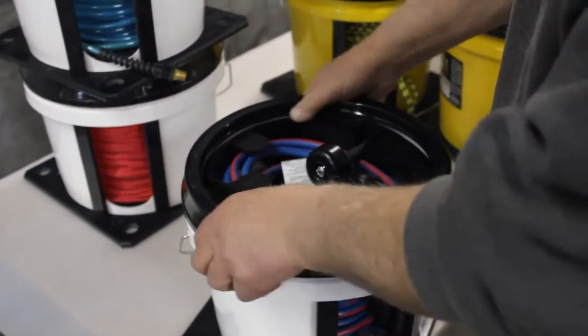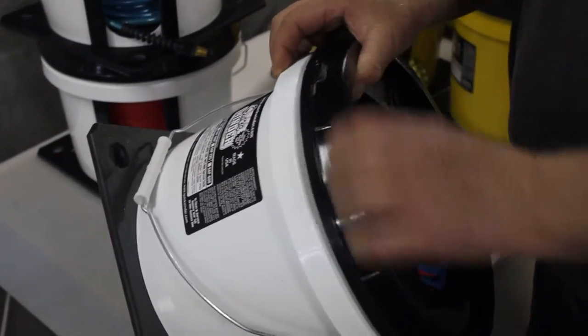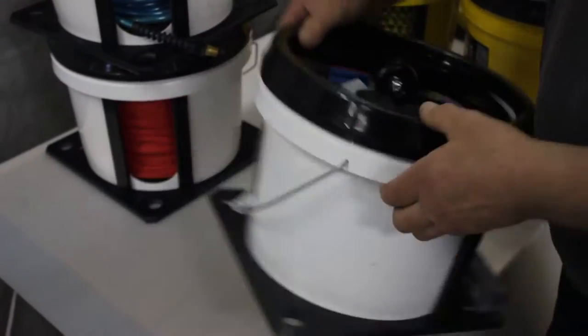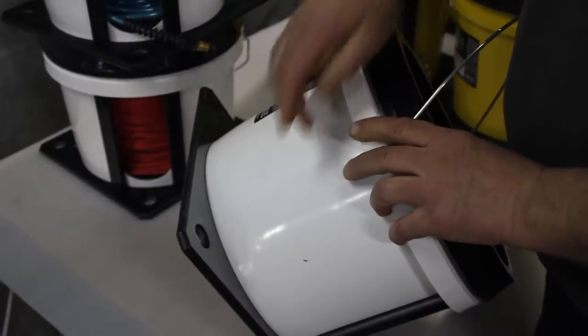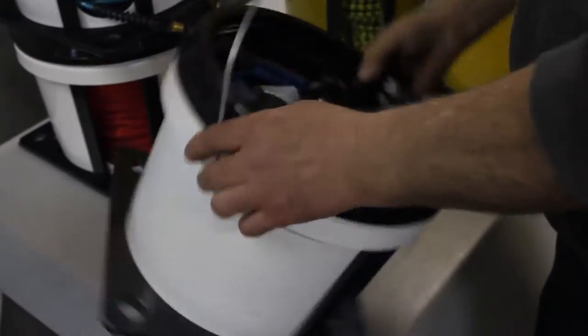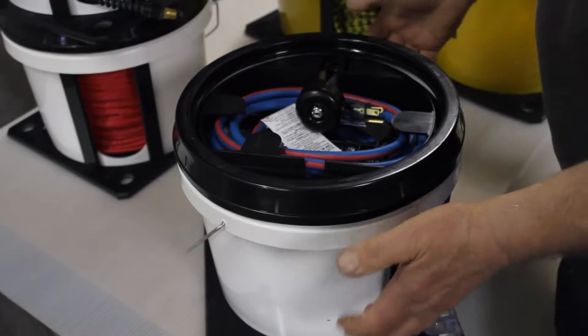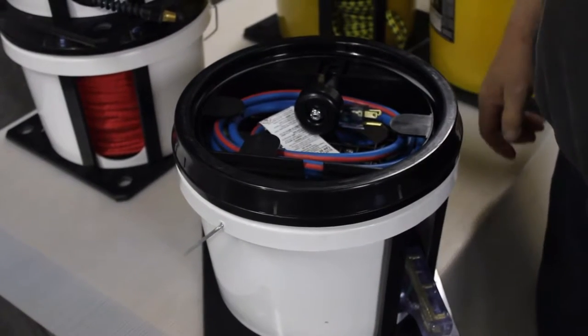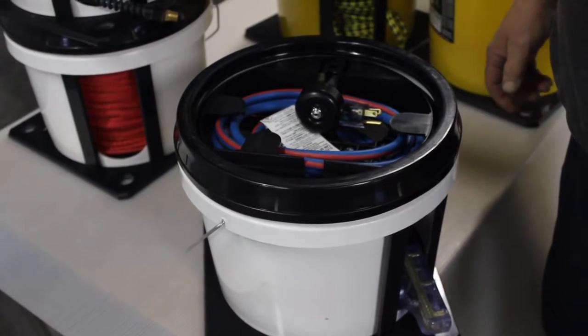They've got a removable lid. Move the tear tab, pull the lid off for cleaning. They've got the outside protection provided by the canister and the pail here. It provides protection for your cords, protecting it from damage and transport and storage.